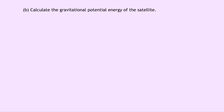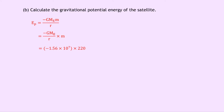Part B says to calculate the gravitational potential energy of the satellite. The expression for gravitational potential energy is EP equals minus GME times M over R. Splitting this up as minus GME over R times M, you'll notice that this expression is the gravitational potential we just worked out in Part A. So EP equals minus 1.56 times 10 to the 7 times 220, using our answer from Part A, giving an answer of minus 3.43 times 10 to the 9 joules.